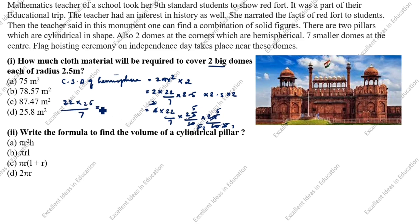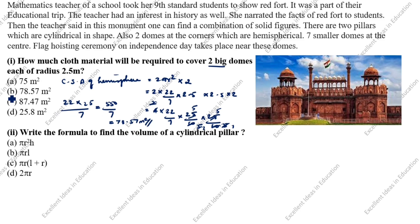22 × 25 = 550, divided by 7, equals 78.57 square meters. So B is the answer.